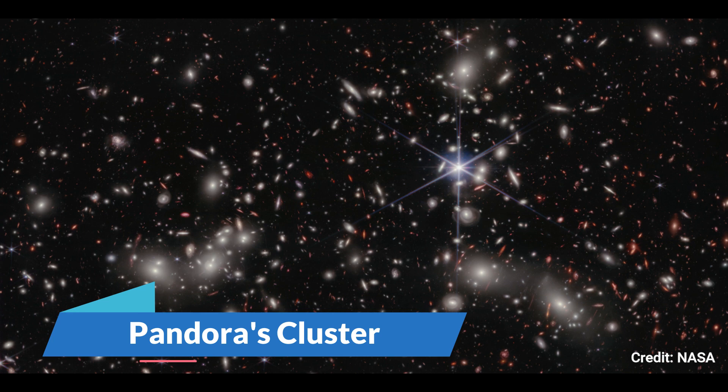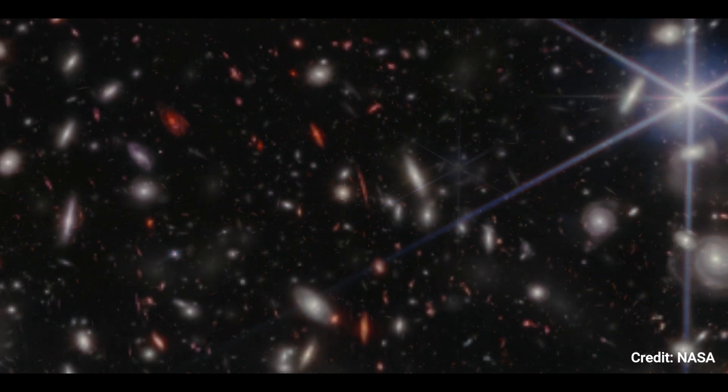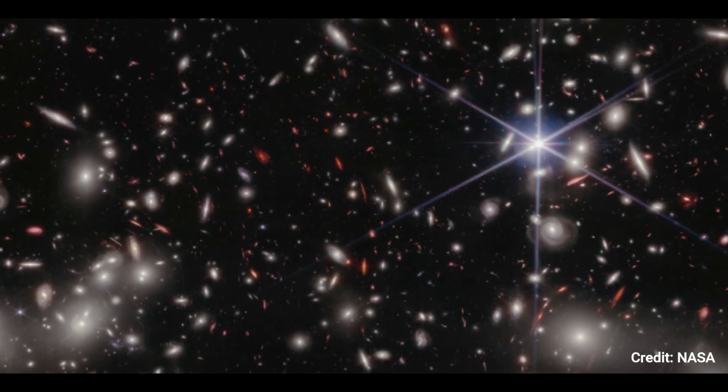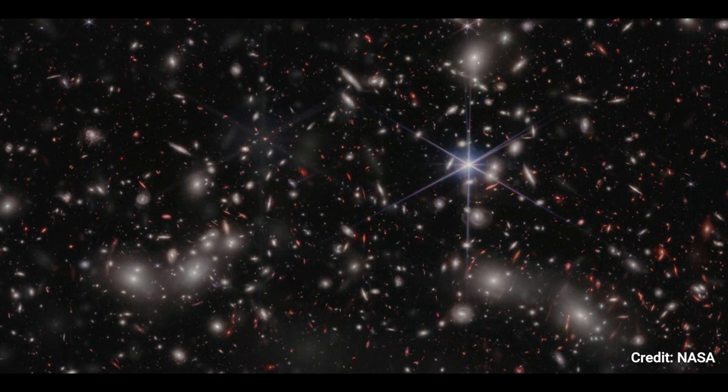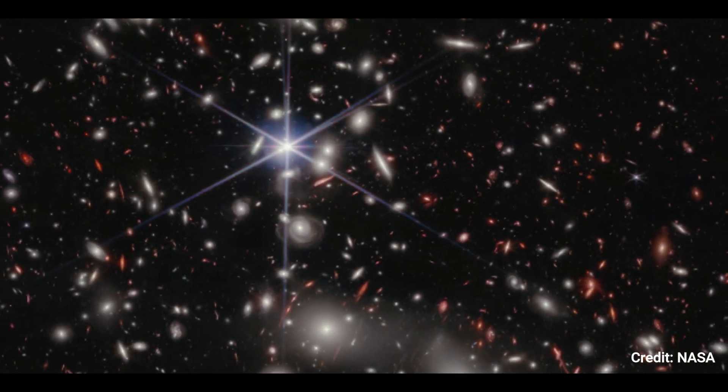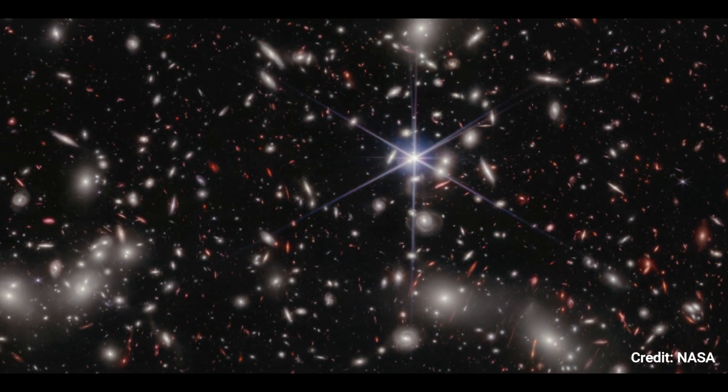Number 9. Pandora's Cluster. Astronomers estimate that this image from NASA's James Webb Space Telescope represents 50,000 sources of near-infrared light. Their light has traveled varied distances to reach the telescope's detectors, resulting in a single image that represents the immensity of space.